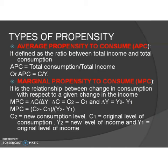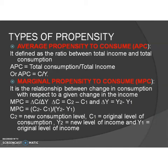APC is defined as the ratio between total consumption and total income. That is, APC = C / Y, where C is total consumption and Y is total income. APC can be calculated as C by Y.